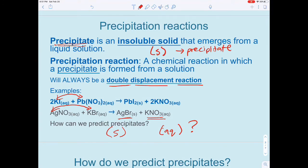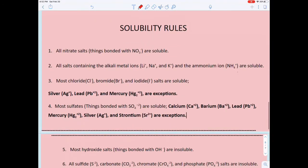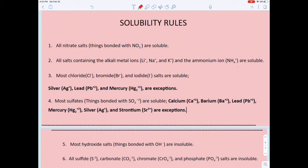We need a certain set of rules—the solubility rules—to help us. This pink worksheet is on Google Classroom. Let's go through these rules quickly. First, all nitrate salts are soluble, so if you see NO3, it's aqueous. Anything with sodium, lithium, potassium—all the alkali metals—and ammonium are soluble.